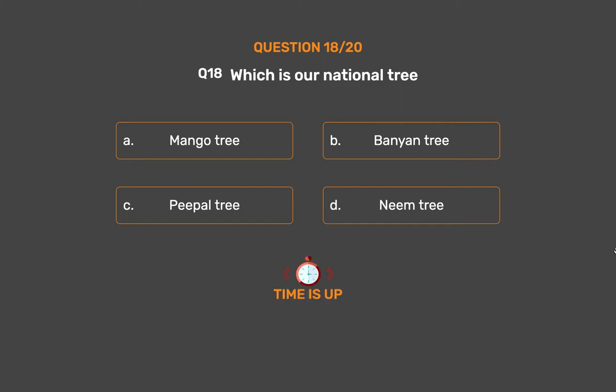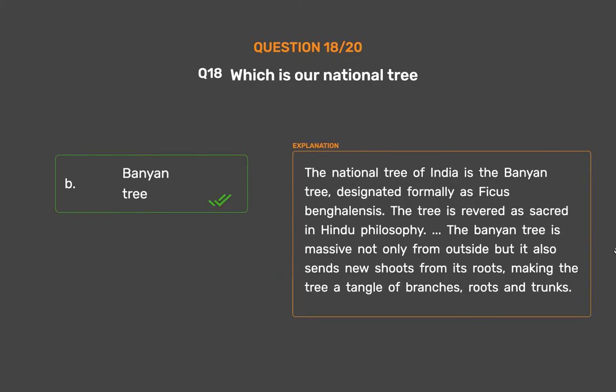The correct answer is Option B: Banyan tree. The national tree of India is the Banyan tree, formally designated as Ficus benghalensis. The tree is revered as sacred in Hindu philosophy. The Banyan tree is massive and also sends new shoots from its roots, making it a tangle of branches, roots, and trunks.